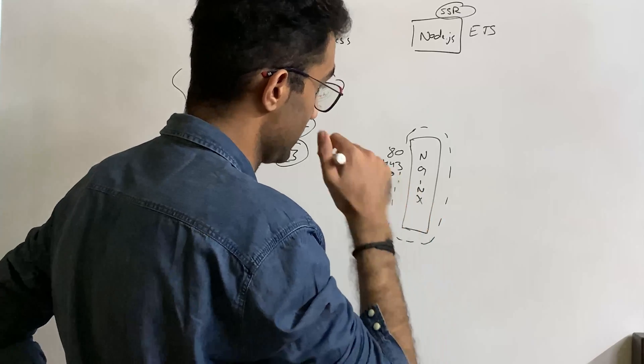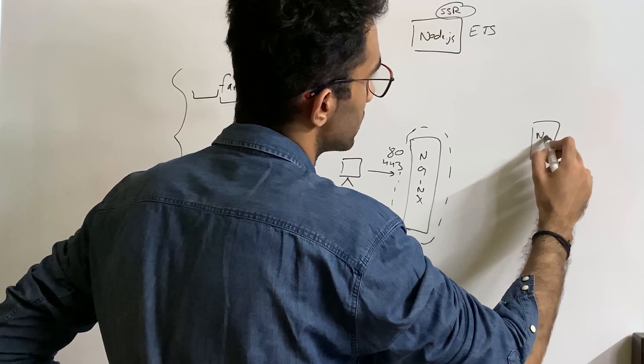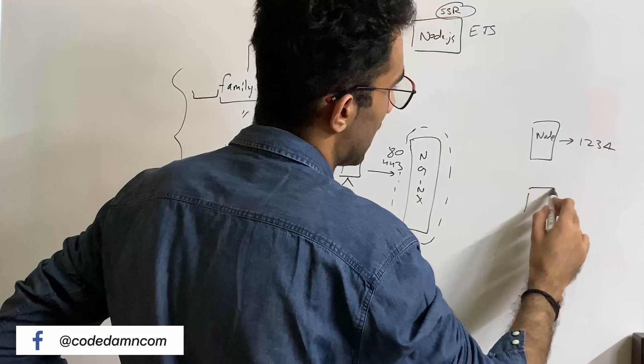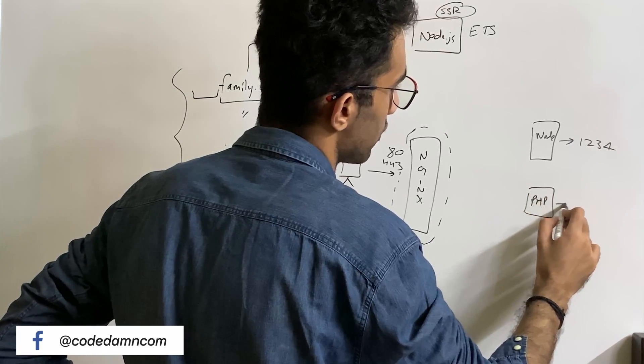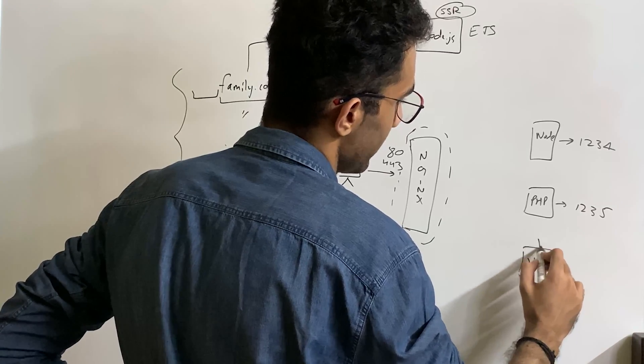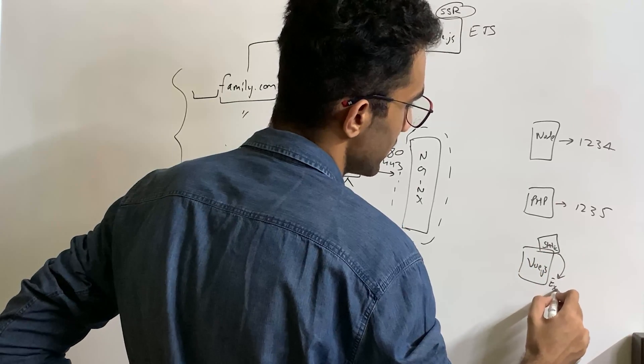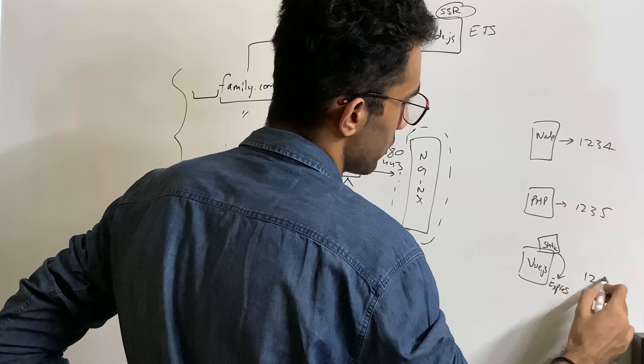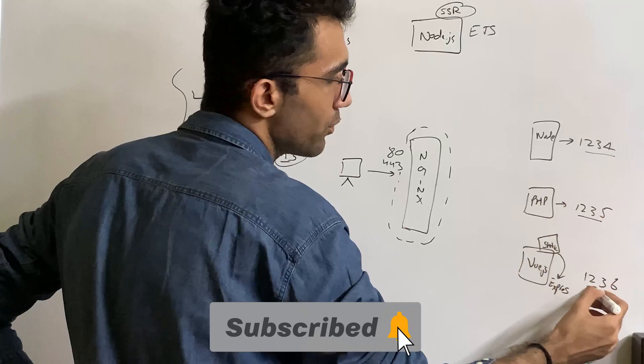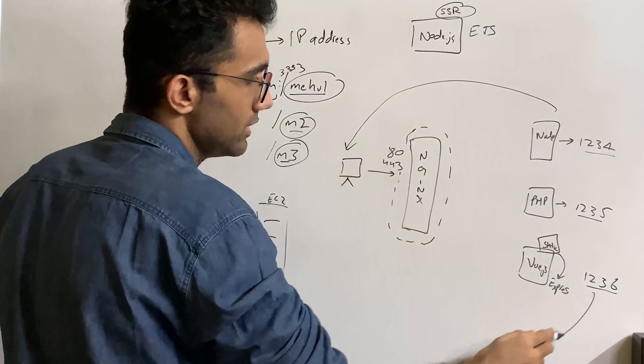So what it will do is that you can specify—let's say you have a Node.js server here which listens on port 1234, then you have a PHP server which is listening on 1235, then you have a Vue.js server which is of course static, so these are just static files but there's a static server running with the help of Express or whatever and this is on 1236. So you see, these applications are listening on ports which are not accessible via internet.